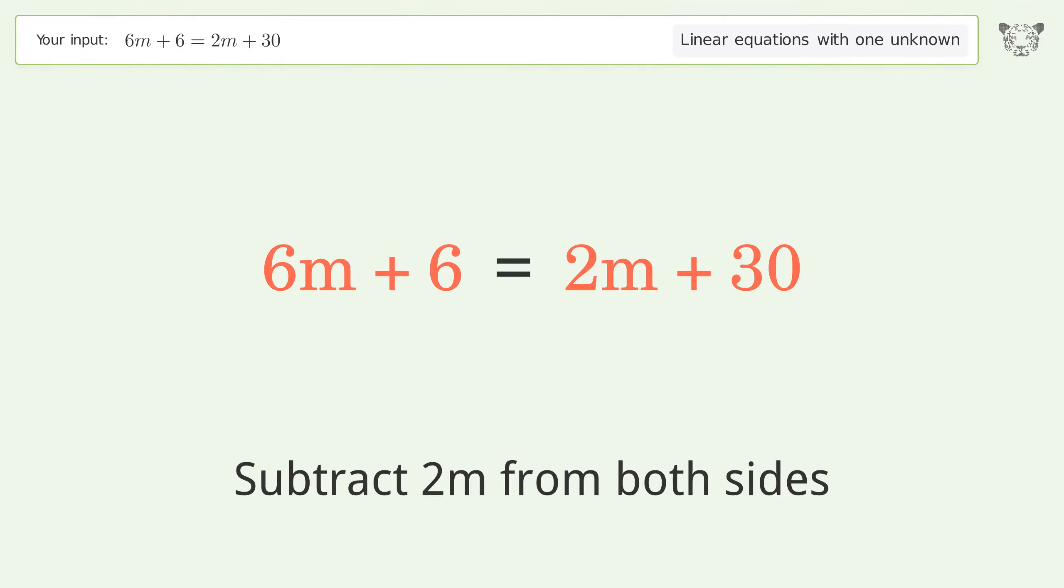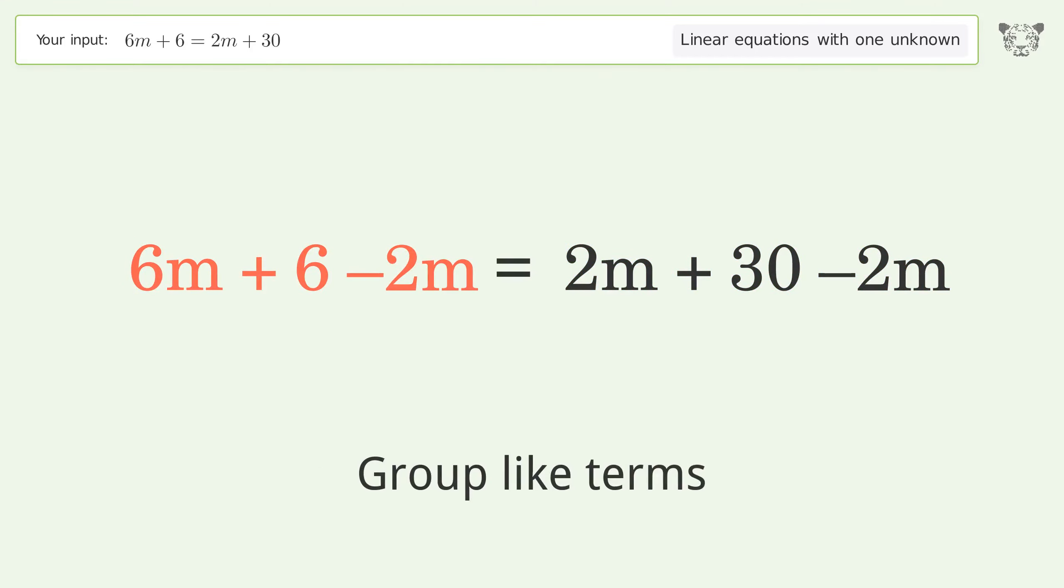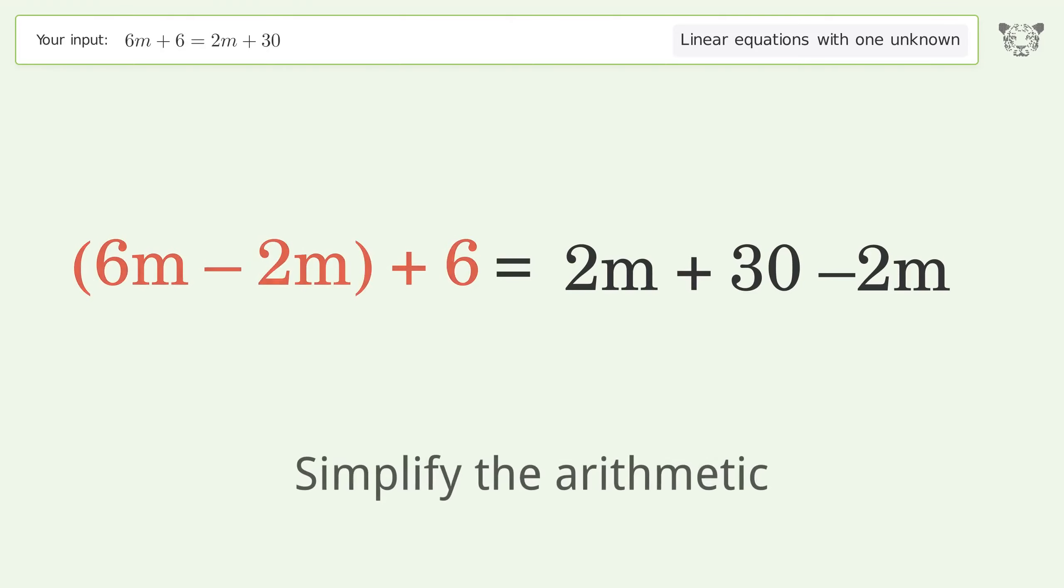Subtract 2m from both sides. Group like terms. Simplify the arithmetic.